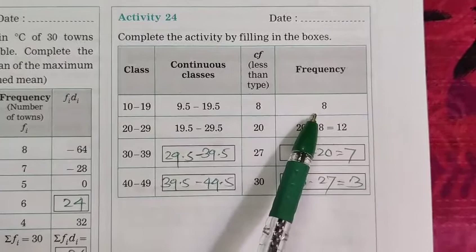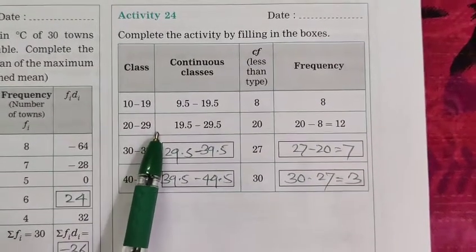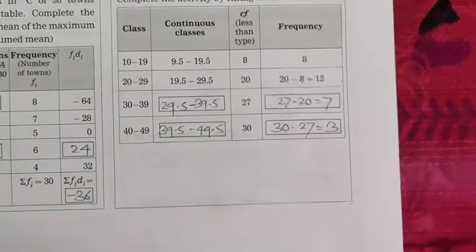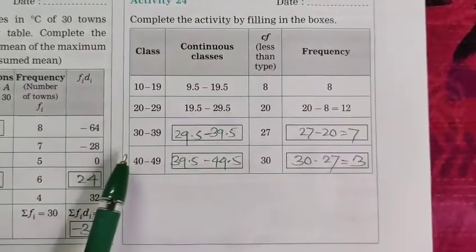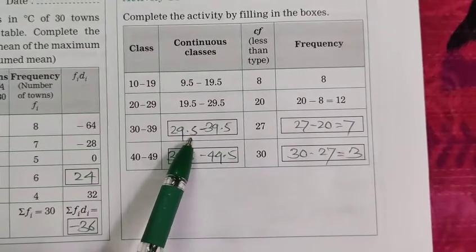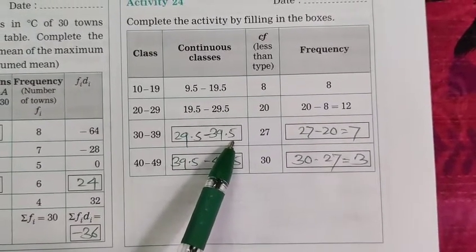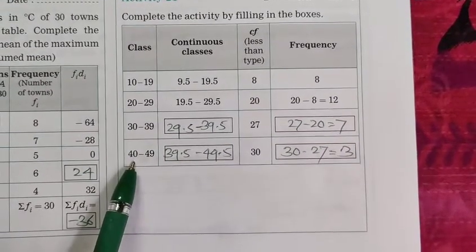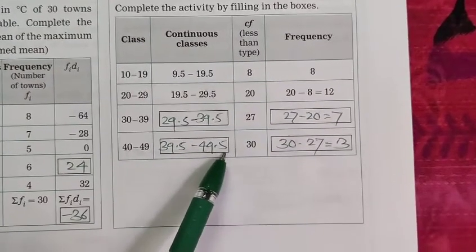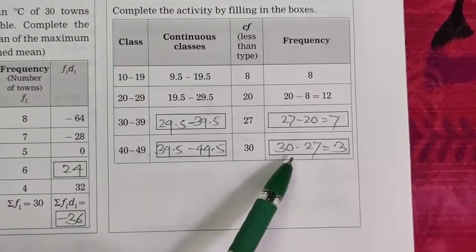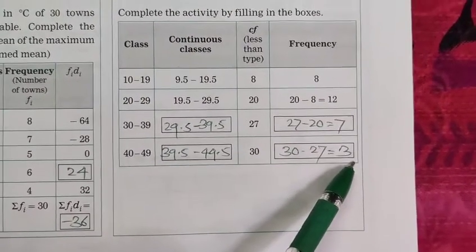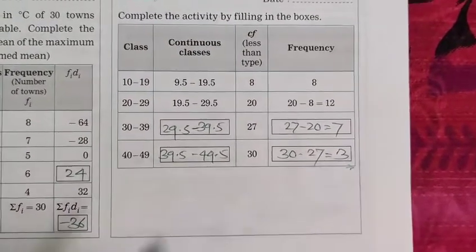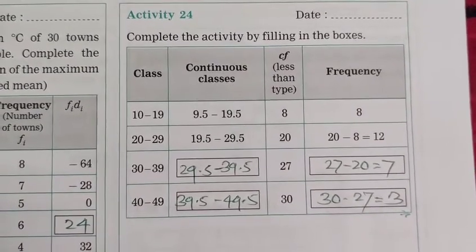Now second, 20 to 29, 19.5 to 29.5. So lastly we get here 20 minus 8 equal to 12. 30 to 39, 29.5 to 39.5 continuous classes, and here cf 27. Here also 27 minus 20 equal to 7. 40 to 49, 39.5 to 49.5. Here 30. Now last column, last box is 30 minus 27 equal to 3. So this is today's last activity, Activity number 24.